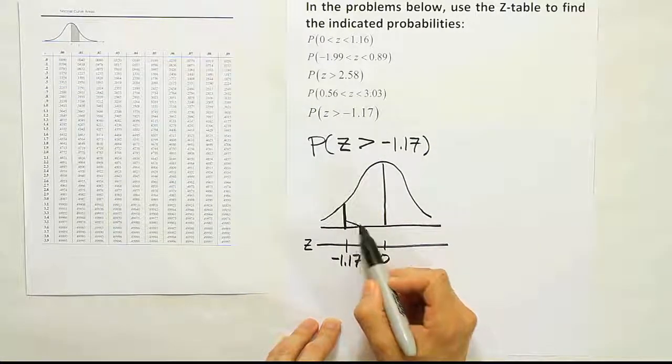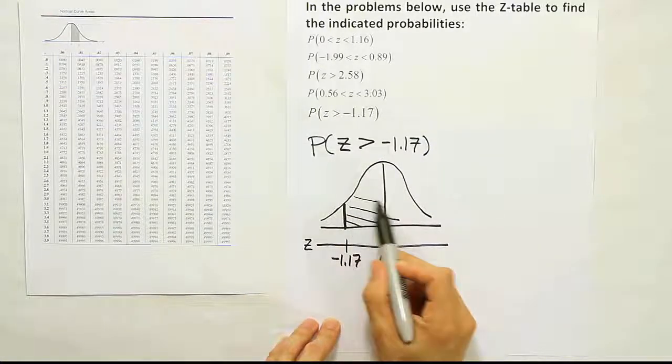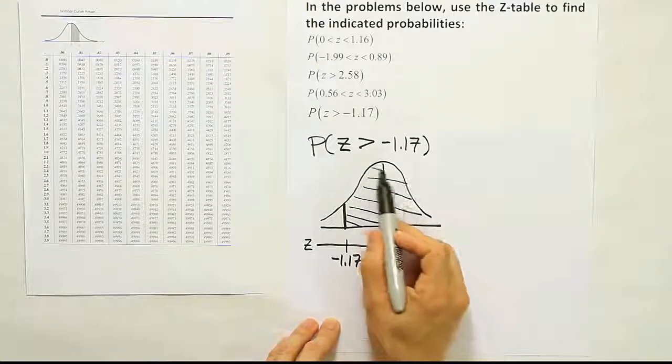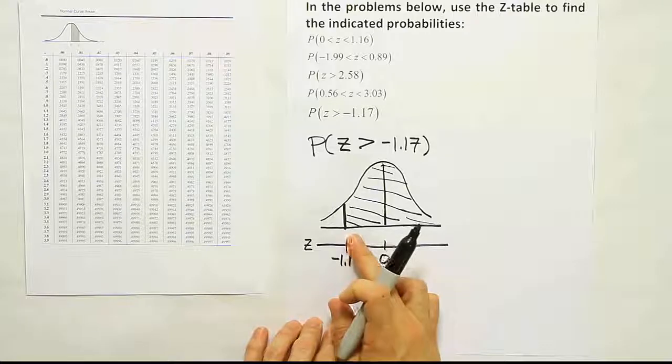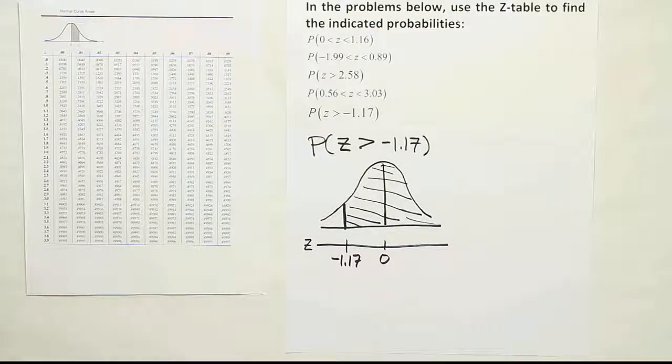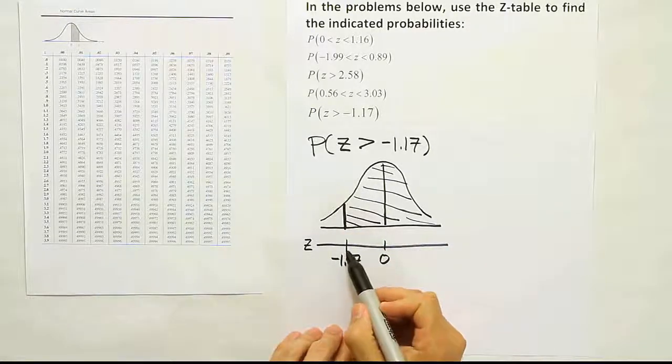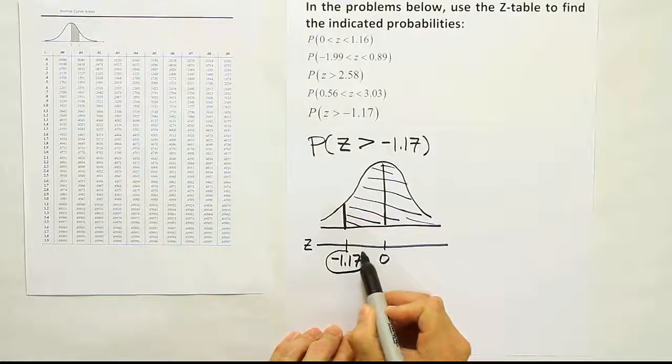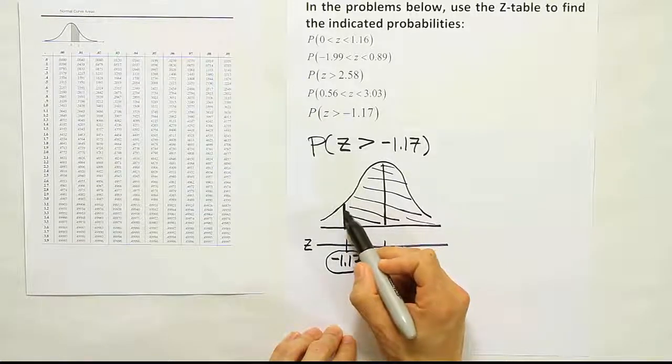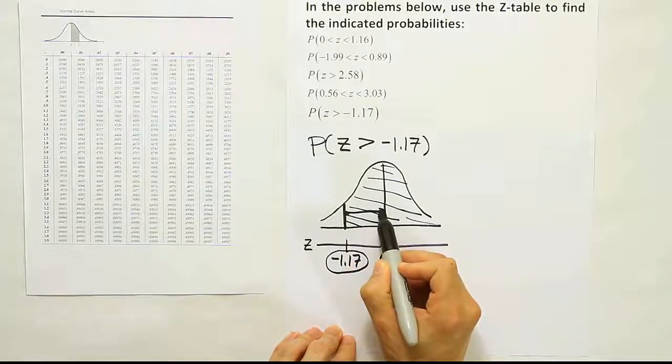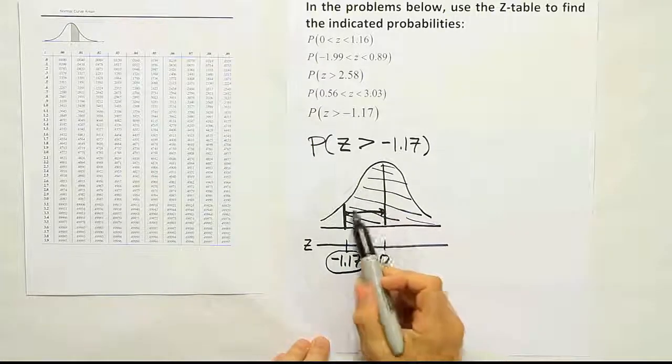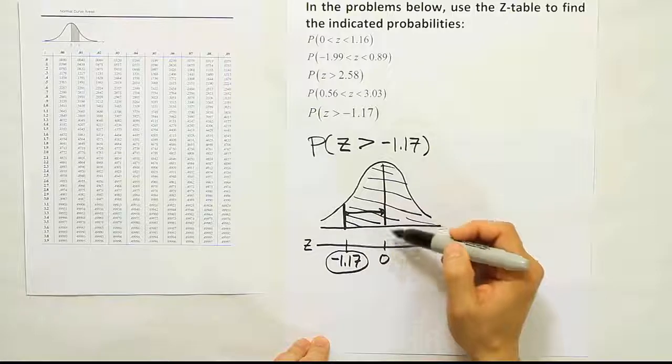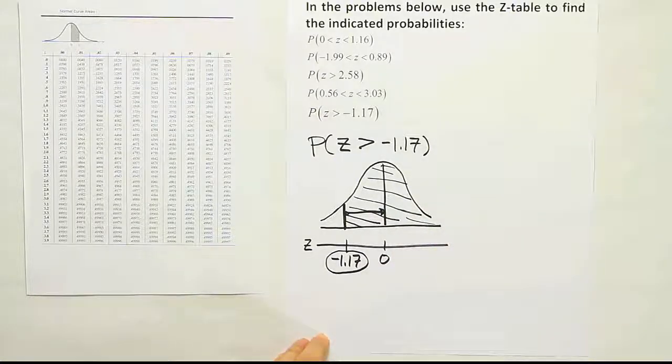Greater than means to the right. Greater than always means to the right here. So we're looking for the area for this entire part of the curve. Before we go to the z-table, let's think about what happens when I look up this number. The table will give me the area from here to the center of the curve, from there to the center. But that's not the full area I want.